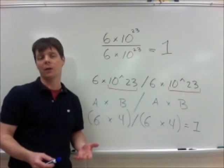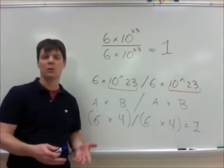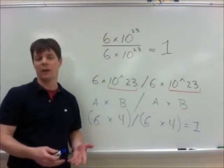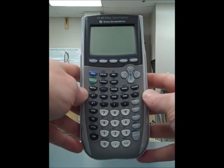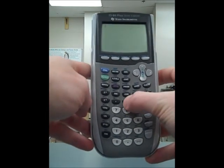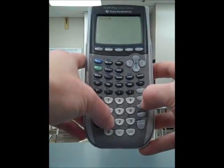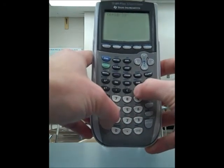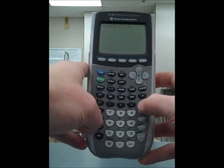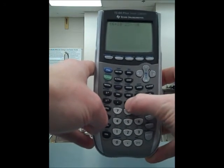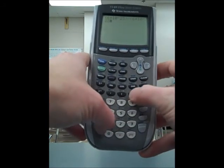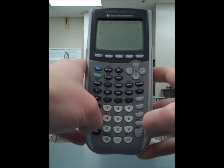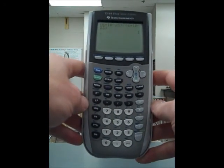There's another strategy that we can also use on our calculator, which is actually going to be the easiest of the methods. One way to get the correct answer is by using parentheses in my calculation. So I need to use parentheses, and then I'll do 6 times 10 to the 23rd, close the parentheses, and then I'll divide by, and I need to use parentheses again, 6 times 10 to the 23rd, close my parentheses, and now get the correct answer, which should be 1.